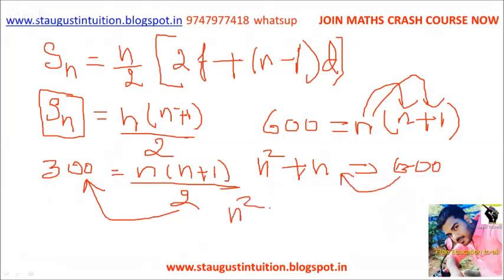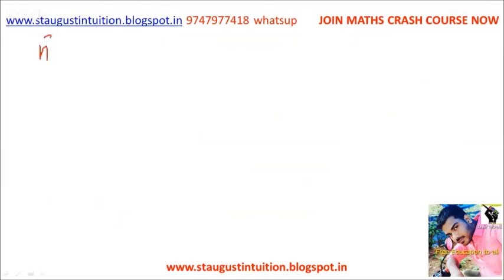This becomes n squared plus n minus 600 equal to 0. Clear? This is a quadratic equation that we will solve. Here, n squared plus n minus 600 equal to 0.